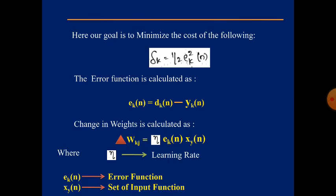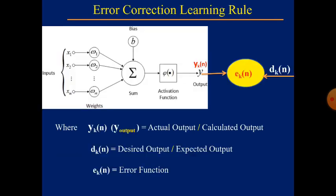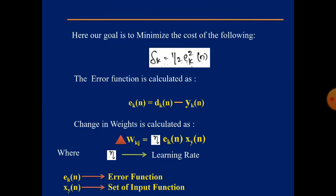The error function ek(n) should be reduced as much as possible to minimize the cost. The error function is calculated as: ek(n) = dk(n) − yk(n), where dk(n) is the expected output and yk(n) is the actual output. The difference between expected and actual output gives us the error function.